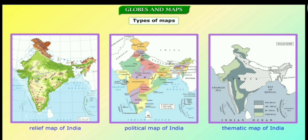Political maps show continents, countries and states along with their borders and major cities.